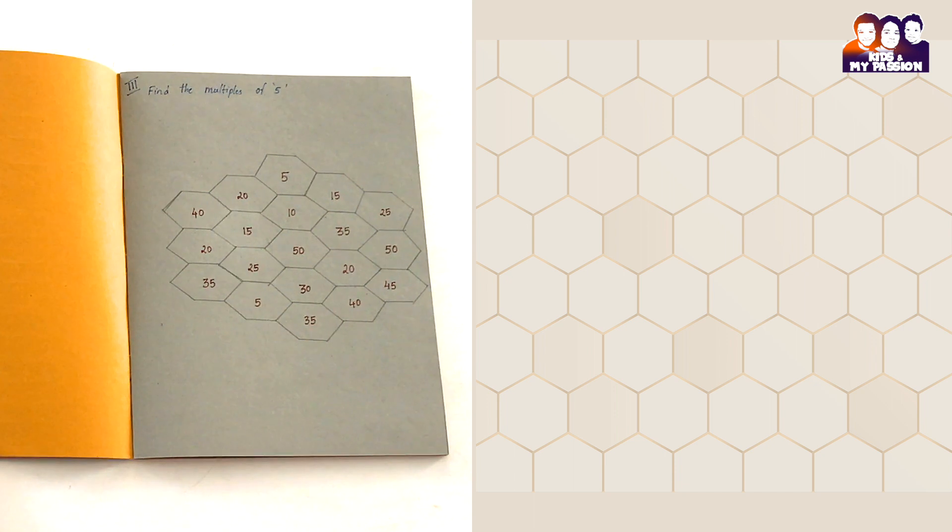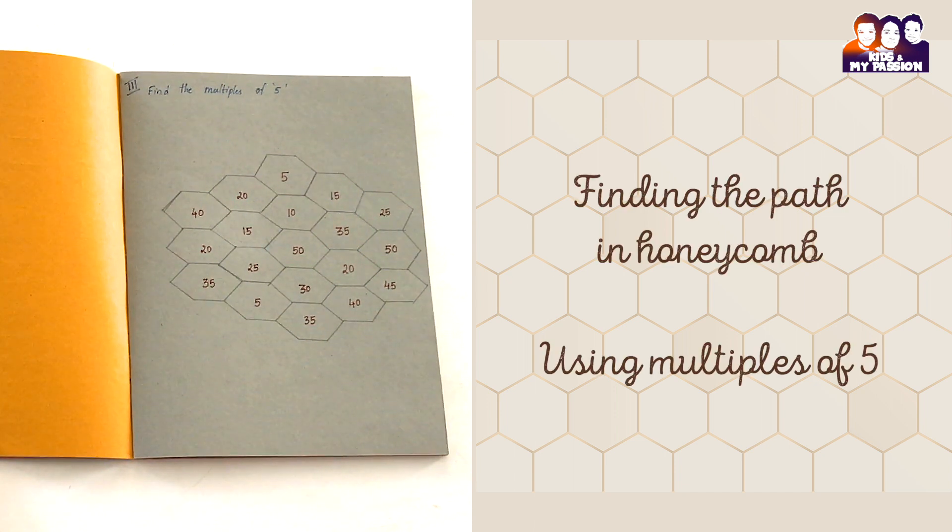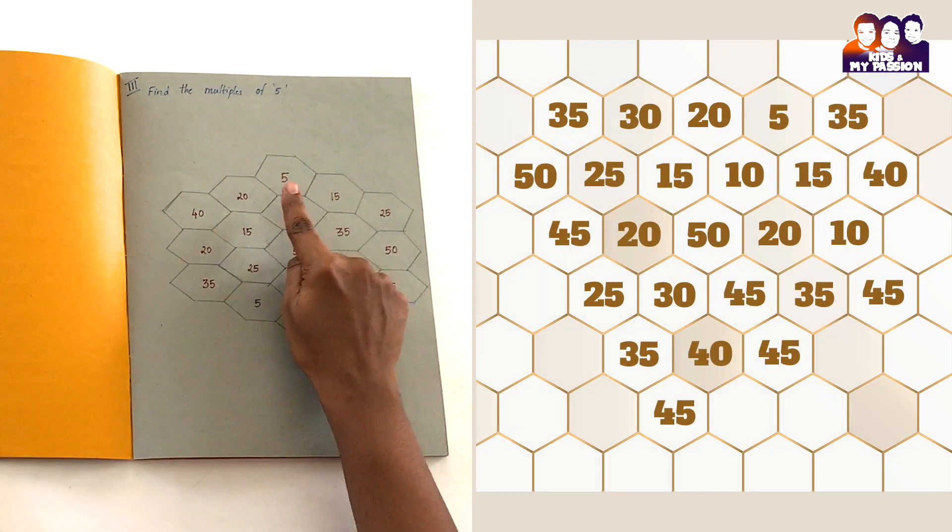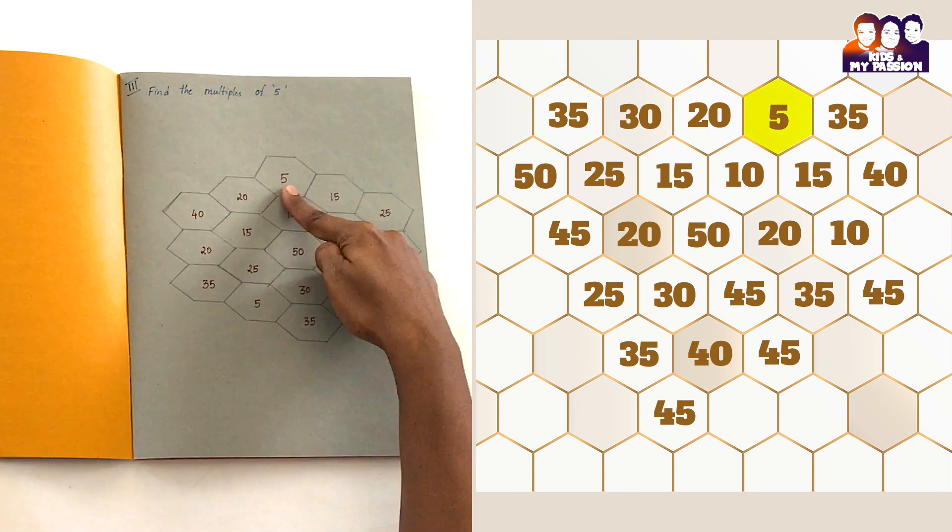Second activity: finding the path in honeycomb using multiples of five. So let's start from five. They need to find next five hops, that is 10.